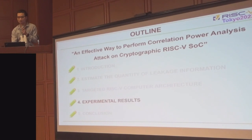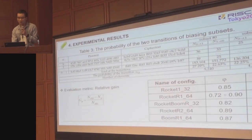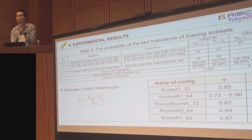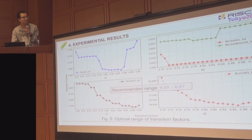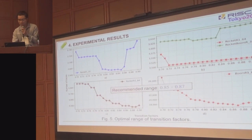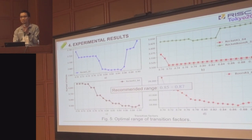Next, let's move on to the experimental results. We use an evaluation metric called leakage ranking. It shows the effectiveness of the attack when combining switching distance and Hamming distance. Figure 5 describes the attack result corresponding to some range of transition factors. On the horizontal axis is the transition factor, and on the vertical axis is the number of traces. The most noticeable thing is that there is an optimal range where the secret key can be recovered with a small number of traces.